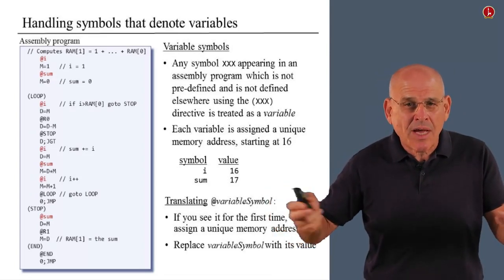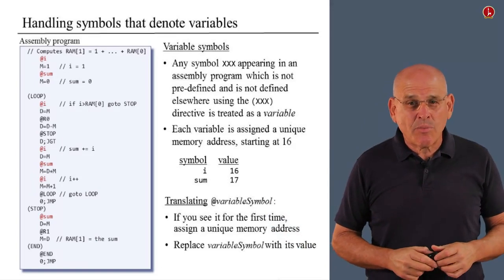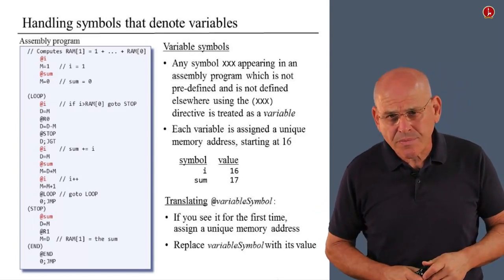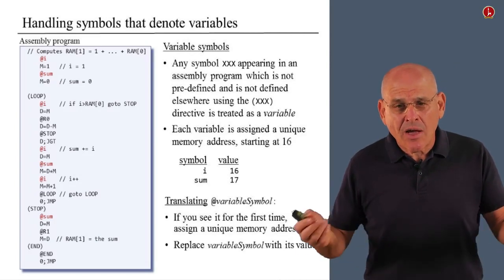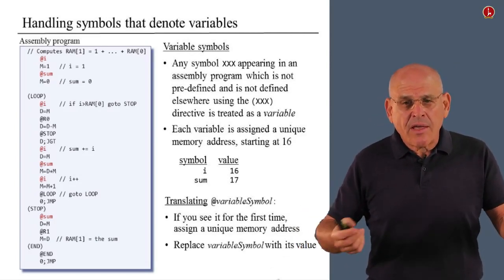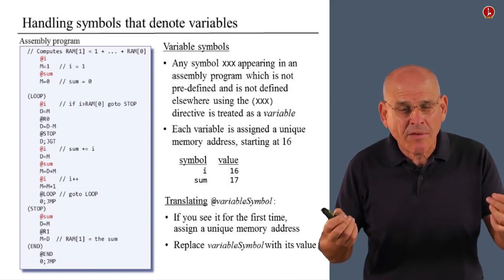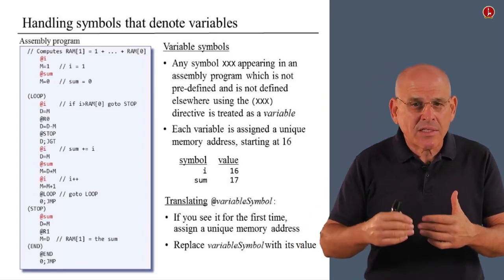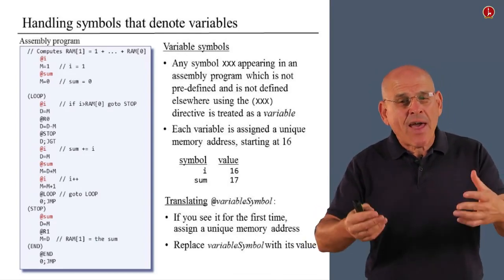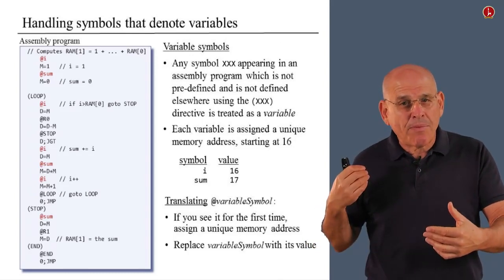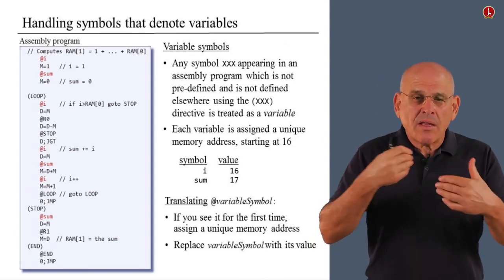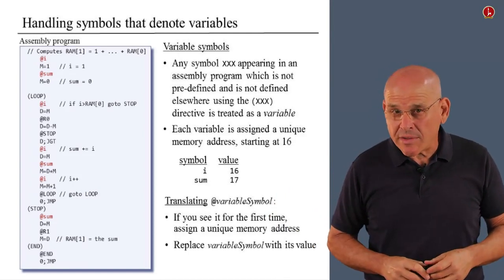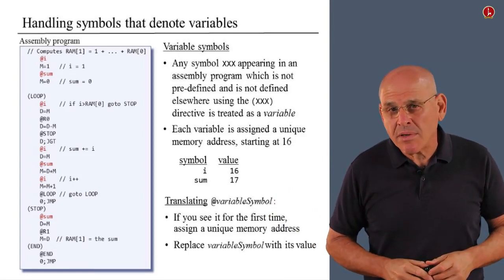We want to act on these variables and we do it using A instructions followed by C instructions. So whenever we see such an instruction, how do we translate it? Well, all you have to do is the following. If you see this instruction for the first time in the program, if this variable appears in the program for the first time, then you allocate it to a memory address starting from address 16 onward. If you see this value popping up later in the program, you simply look up the value that you assigned to it before. And then what remains is an at decimal value instruction, which we already know how to handle. So this is how you handle symbols that represent variables.